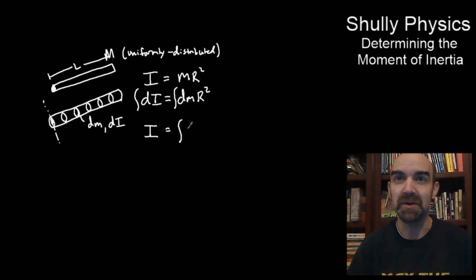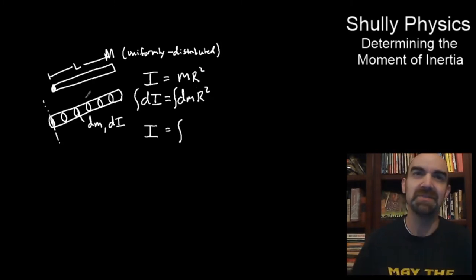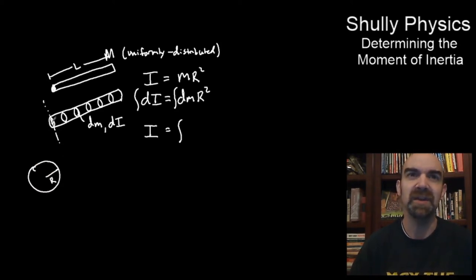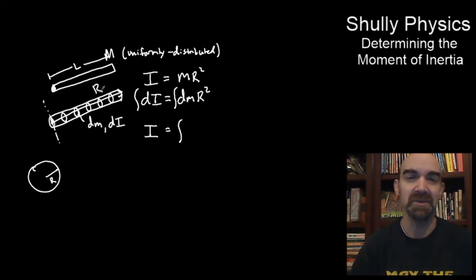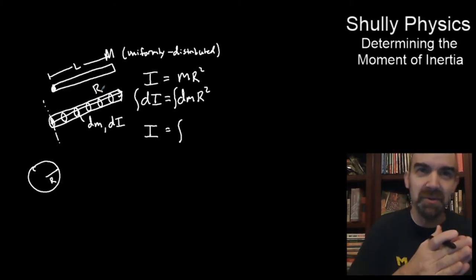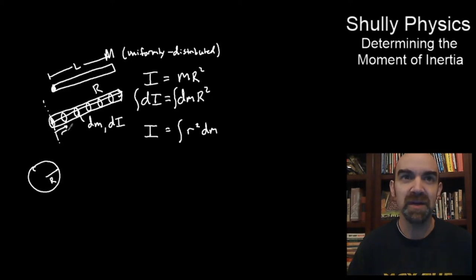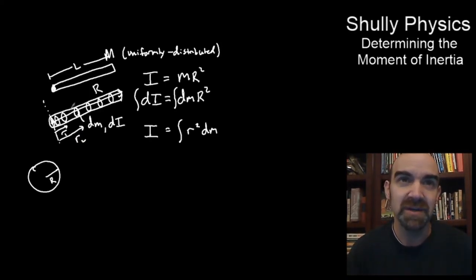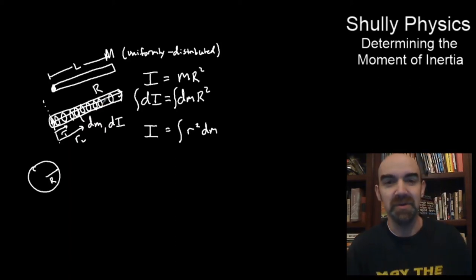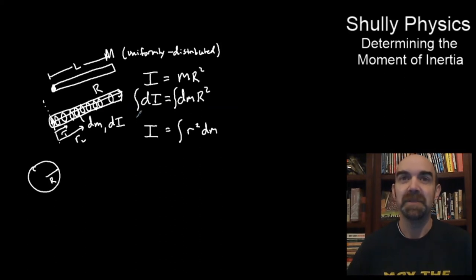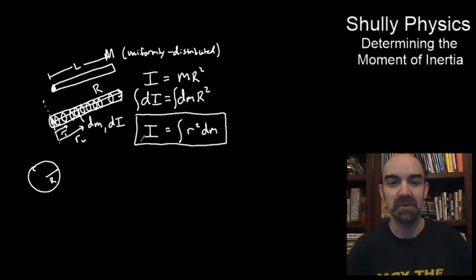This gives us an expression that allows us to analyze any rotating system and find its moment of inertia I. If we sum up all the little dI's, we get I, the total moment of inertia: I equals the integral of r squared dm. I'm calling it little r, because each of these little dM's has its own r value — there are infinitely many small slices of dM, each at a slightly different radius.